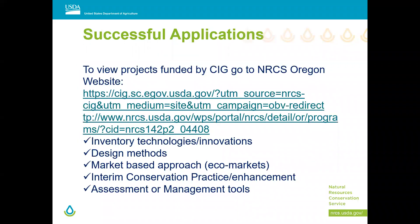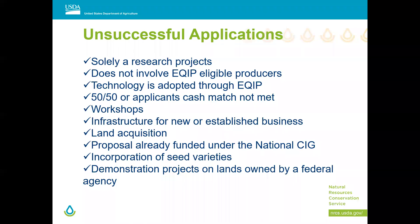Successful applicants can visit the CIG website to look at projects we've already funded. We're looking for a market-based approach that could move to an interim conservation practice, as well as assessment and management tools — for example, an irrigation management system to better measure water use. Unsuccessful applications include those that are solely research projects, don't involve eligible producers, lack the required match, are already funded under another CIG, or otherwise don't meet requirements.